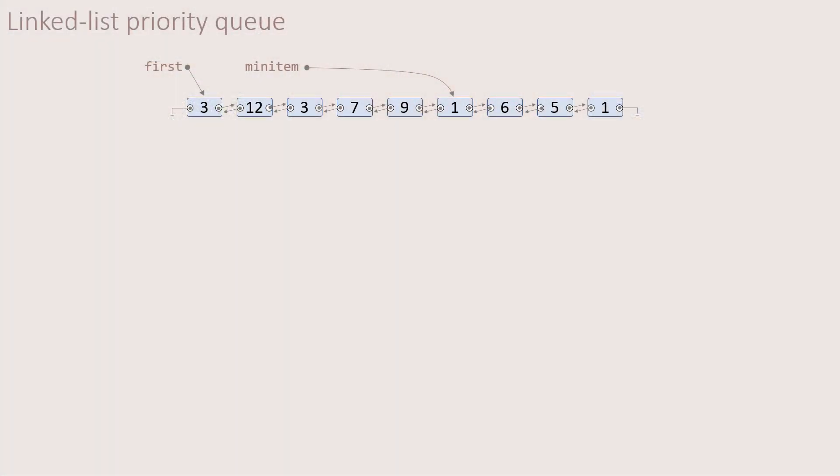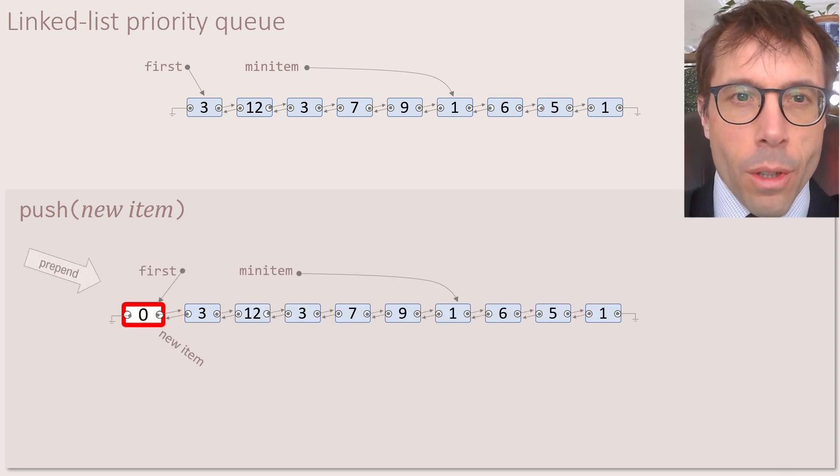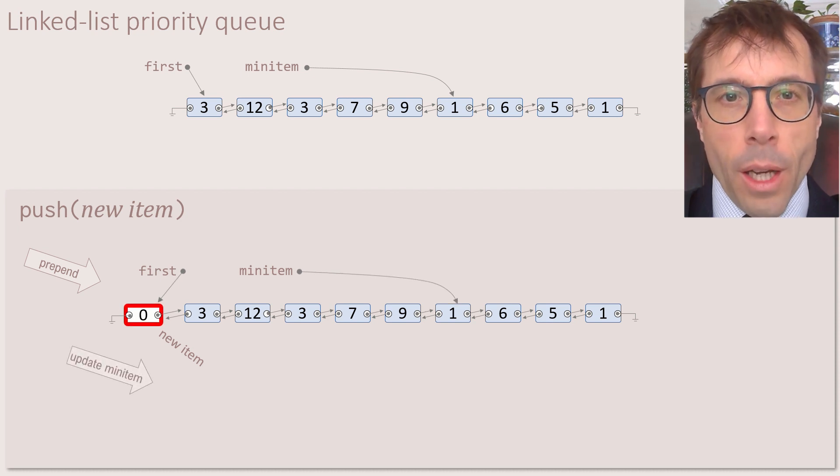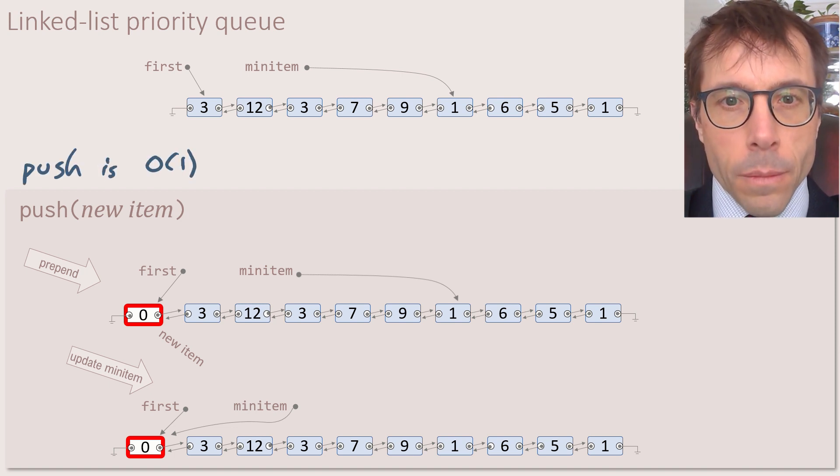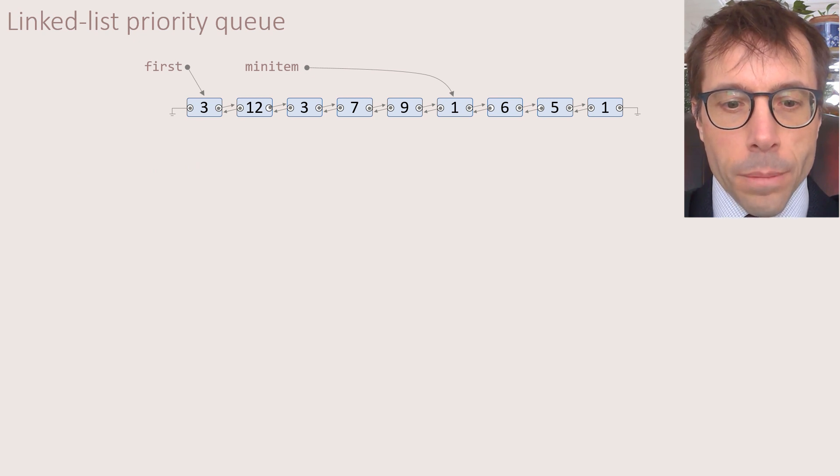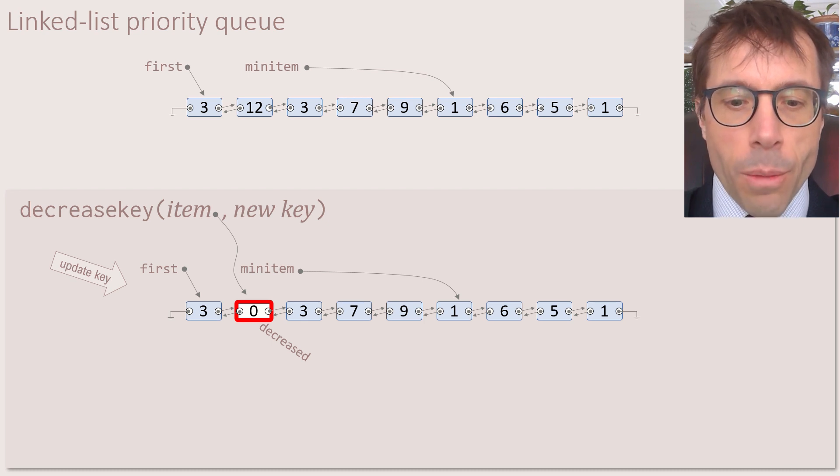I'm going to show an implementation in which push and decrease key are both O of one, but the price we end up paying is that pop min ends up being very slow. I'm just going to use a plain doubly linked list to store all of the items. Let's say I'm also going to keep track of the smallest item. It's totally trivial to push a new item. We just stick it onto the end of the list, and we may possibly have to update the min item pointer. And this is all O of one. Next, decrease key. This is very simple to do also. We simply decrease the key of the item that we're interested in. And as before, we may have to update the min item pointer.